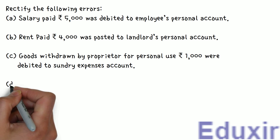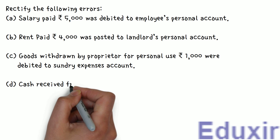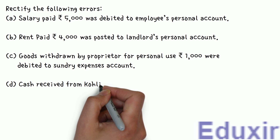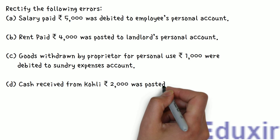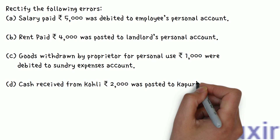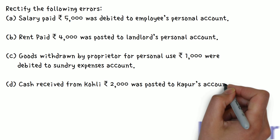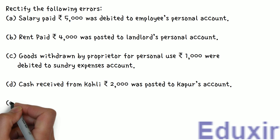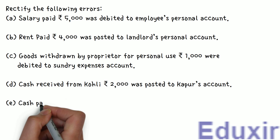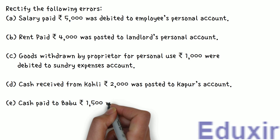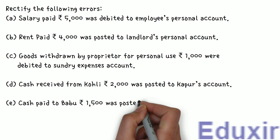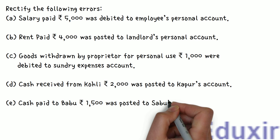D: Cash received from Kohli, Rs. 2,000 was posted to Kapoor's account. E: Cash paid to Babu, Rs. 1,500 was posted to Sabu's account.